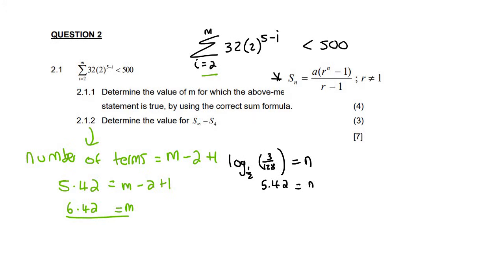So what this means is that m, because we don't want this, we don't want these to become too big, because then they're going to go above 500, 6.42 is the upper limit.